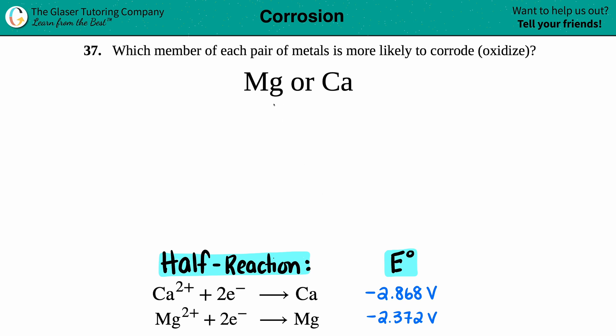Number 37. Which member of each pair of metals is more likely to corrode, also known as oxidizing? So if I have a sample of magnesium or calcium, which one would oxidize or corrode faster?